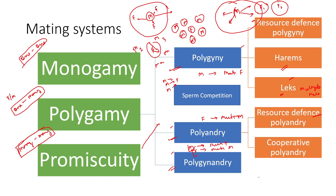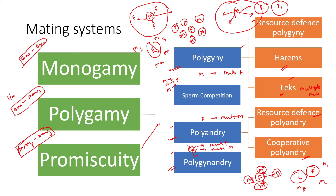Resource defense polyandry is a similar concept for polyandry — a female selects particular males who each hold territorial resources or resource benefits. When she mates with multiple males she gains the benefits of multiple territories and is defended by multiple males. Cooperative polyandry is where a female lays a clutch of eggs — say six eggs — and multiple males (male one, two, three) have mated with her so none of them know which eggs are theirs, so all of them provision and cooperate to raise that brood.